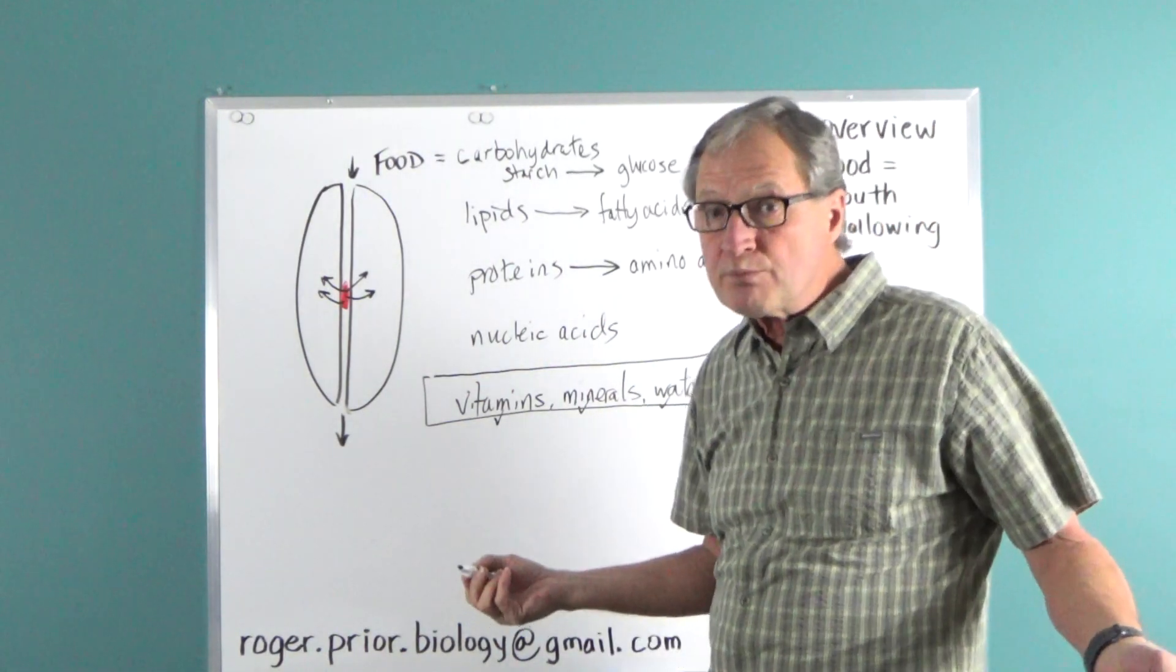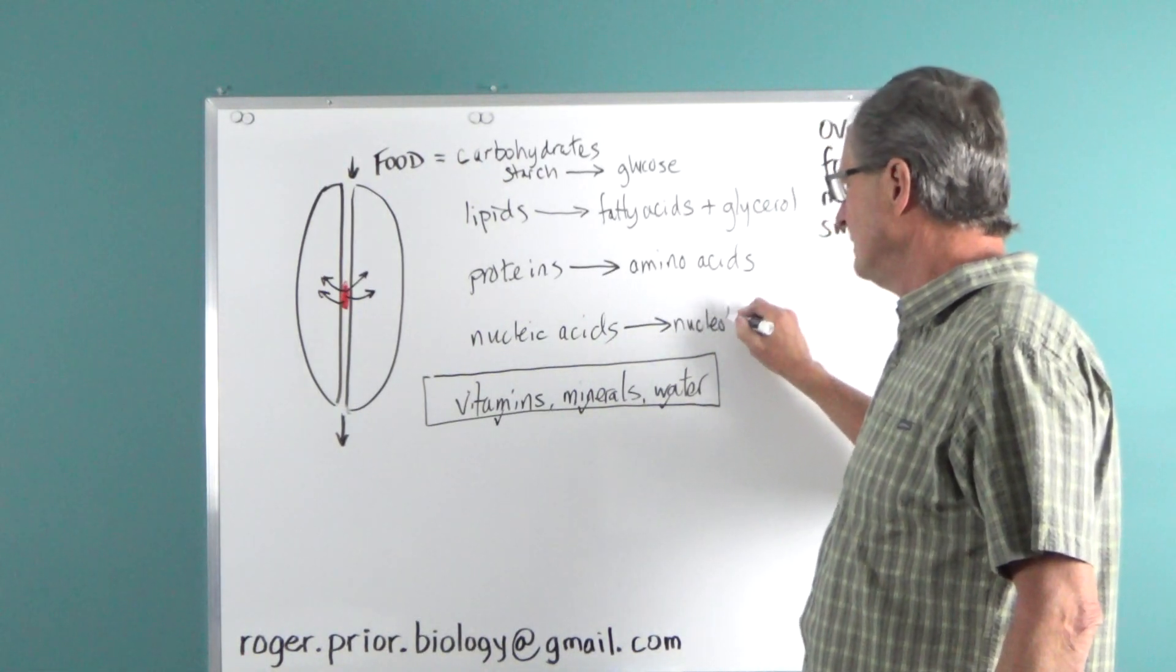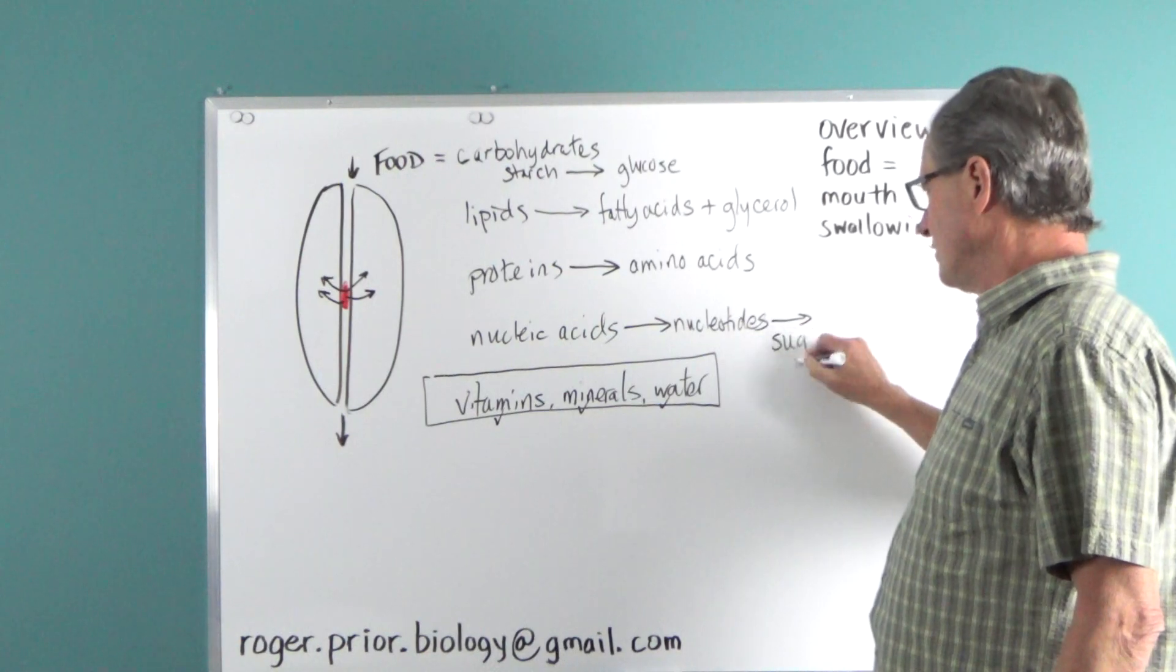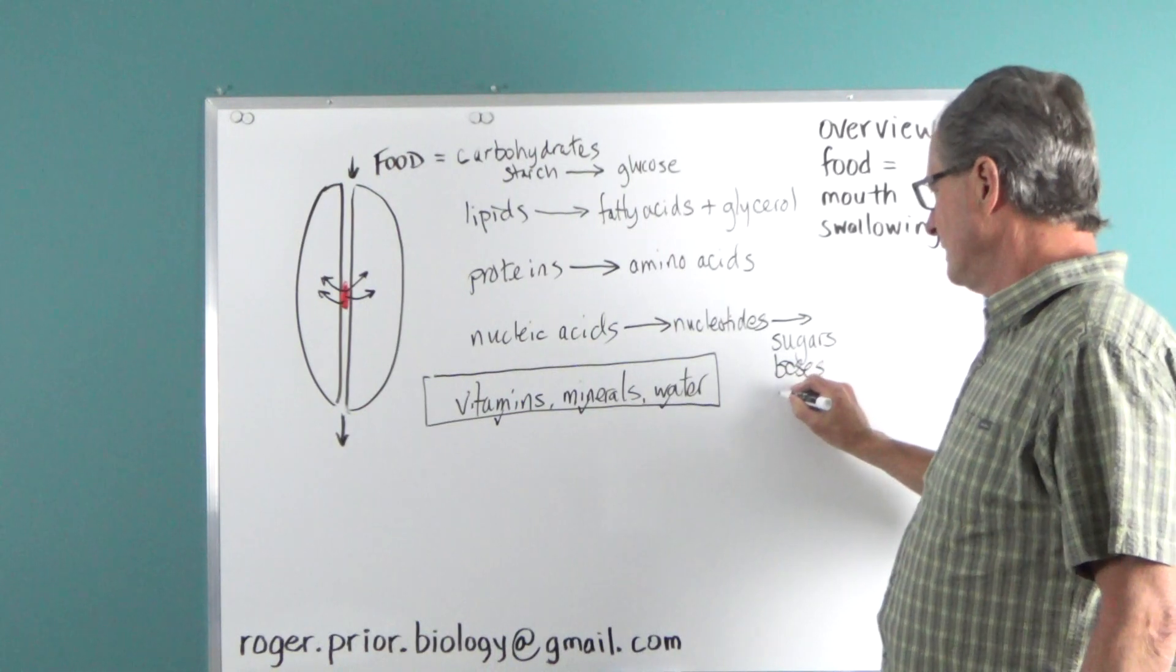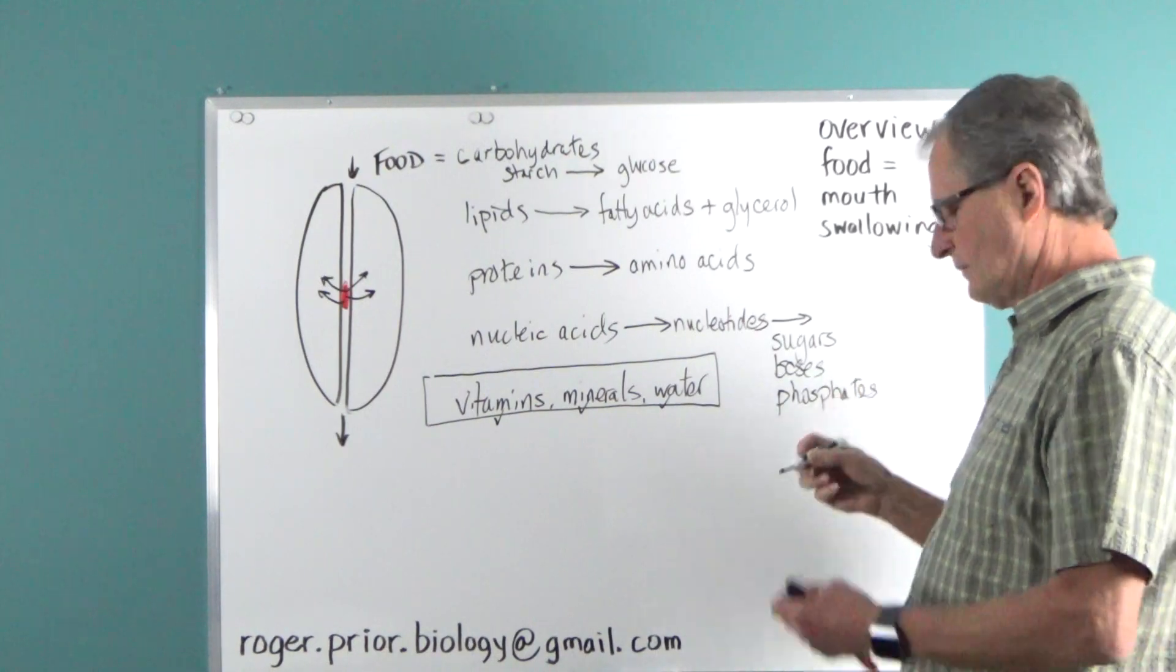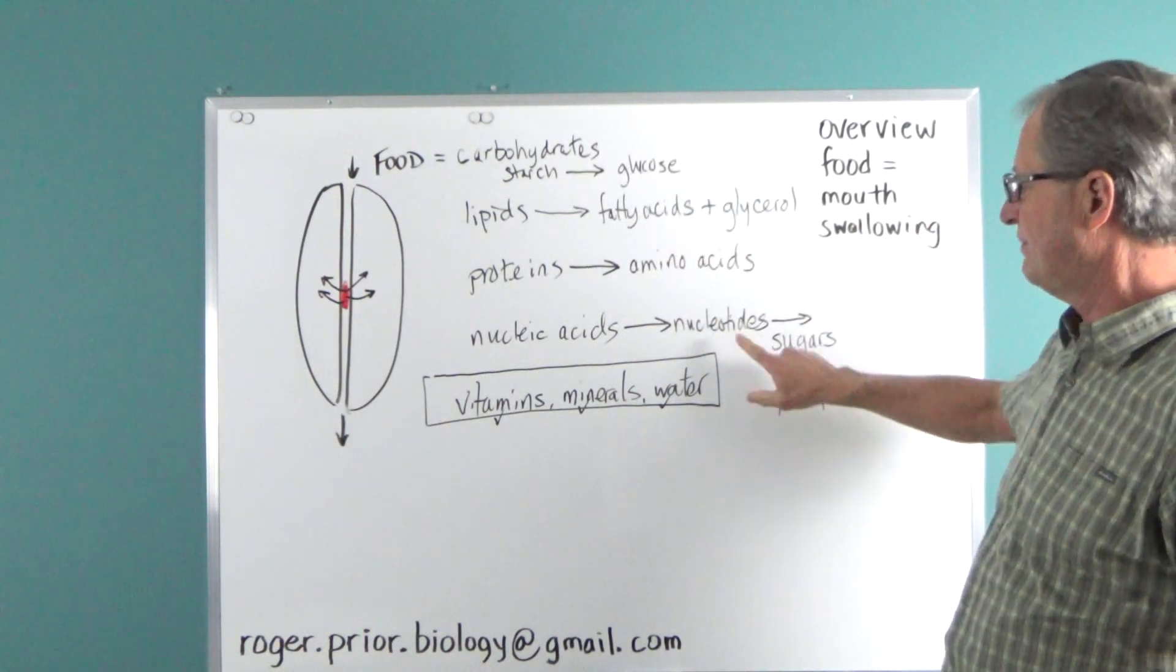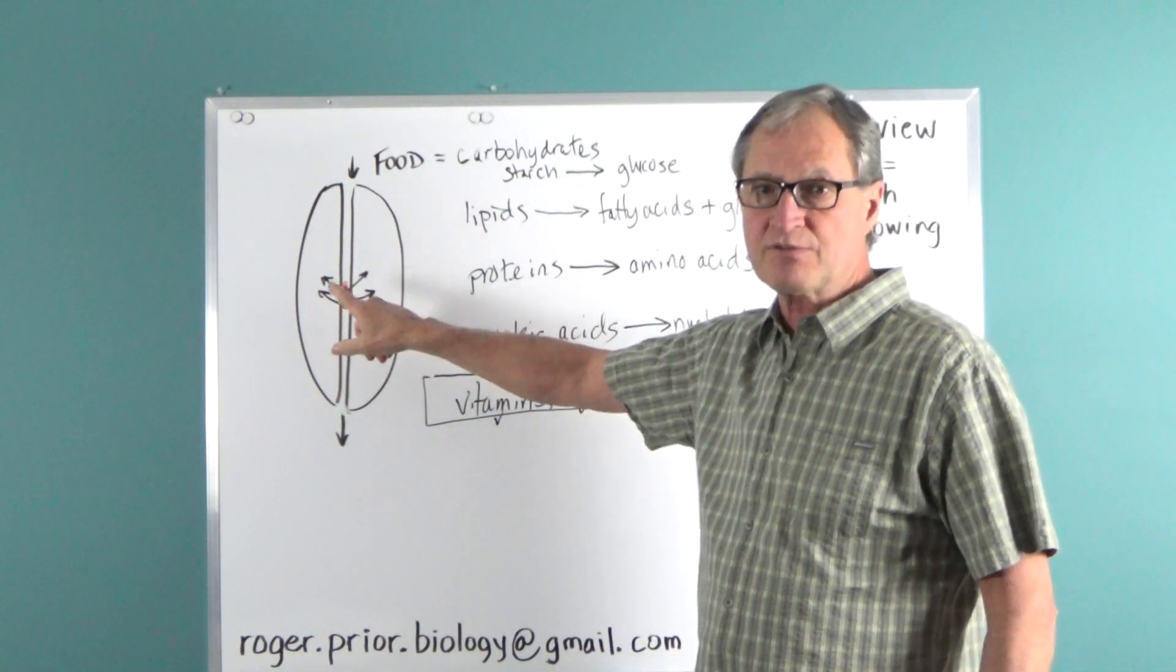Nucleic acids, chromosomes if you like, these things have to be broken down into nucleotides, and nucleotides themselves are still too big. They have to be broken down even further into their components, which are sugars, bases, and phosphates. These items—glucose, glycerol, fatty acids, amino acids, and the sugars, bases, and phosphates that make up the nucleotides—are all small enough to get out of the digestive system.